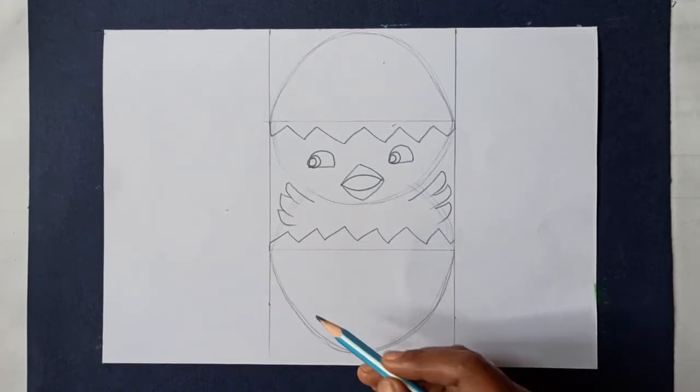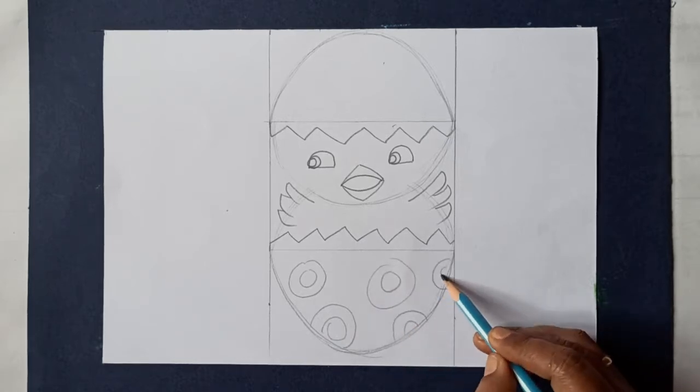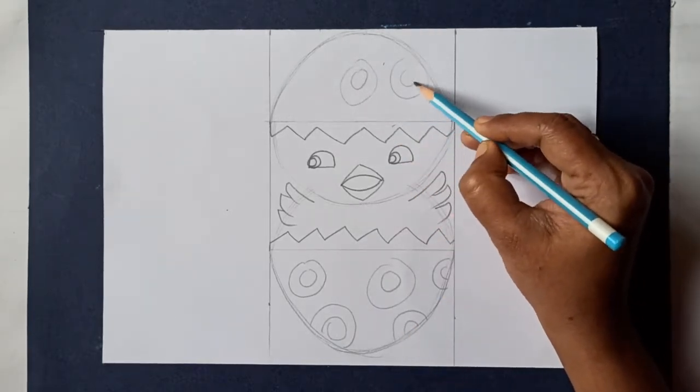Now decorate the eggshell. Do the outline with sketch pen and cut the rectangle shape.